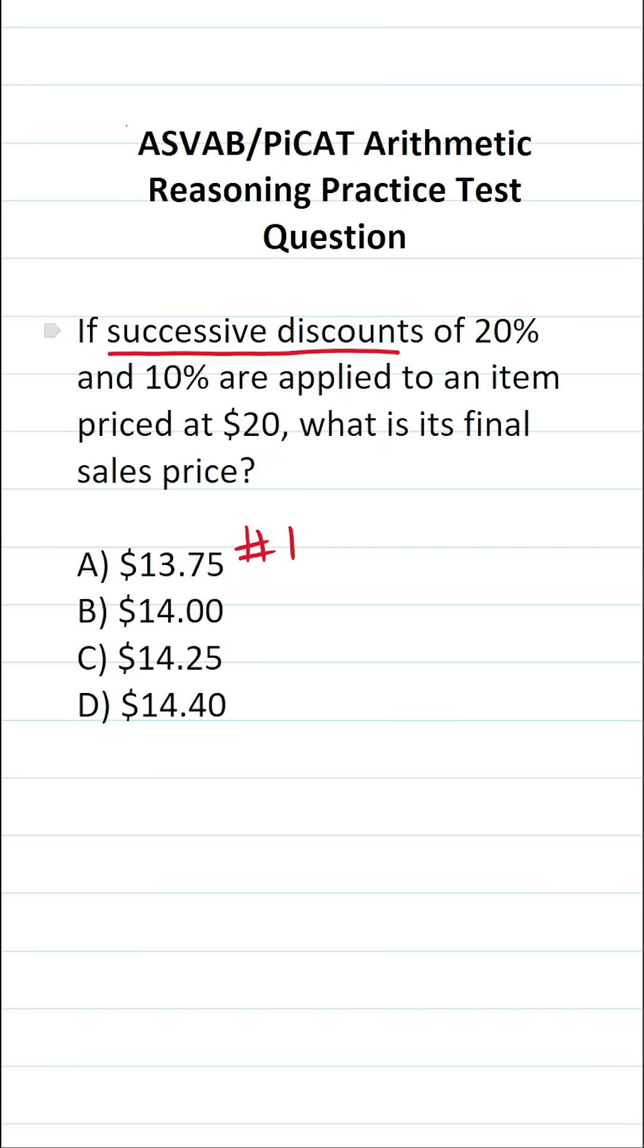So first, we're going to calculate our discount of 20%, and then after that, we'll calculate our discount of 10%. The way you cannot solve this one is by saying, well, there's a discount of 20%, and there's a discount of 10%, so I'm just going to take 30% off the item.